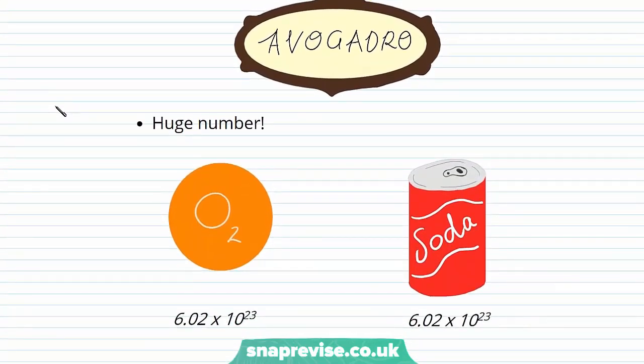If we think about having one mole of oxygen molecules, we'd have 6.02 times 10 to the 23 oxygen molecules. That's 602 sextillion. Just to put that in proportion for you, if we had one mole of soda cans, that's 602 sextillion soda cans, they would cover the Earth to a depth of 200 miles. So that really puts in proportion how big the mole actually is.